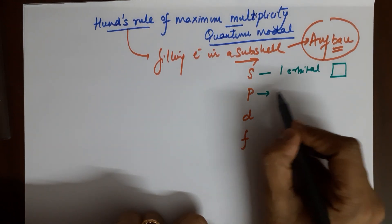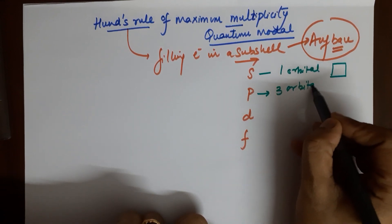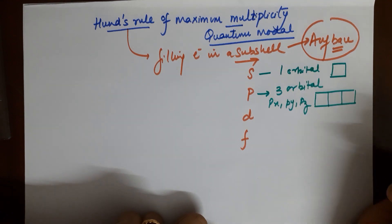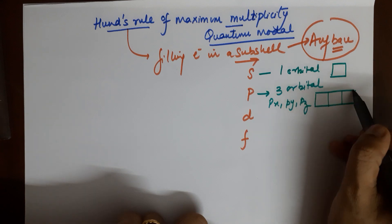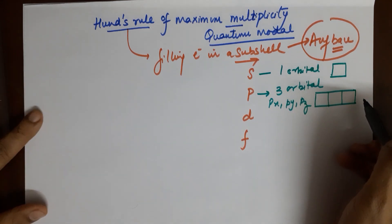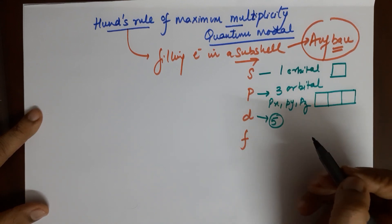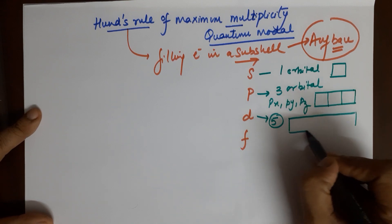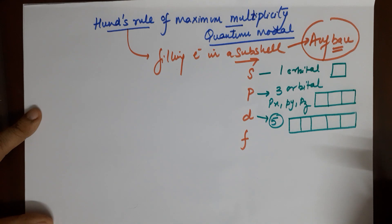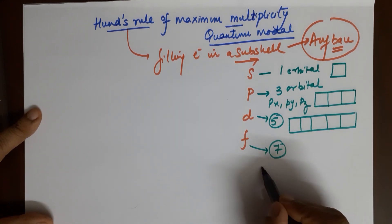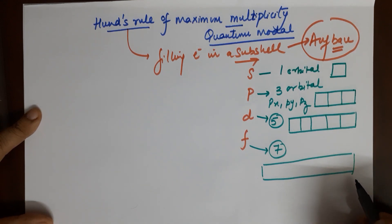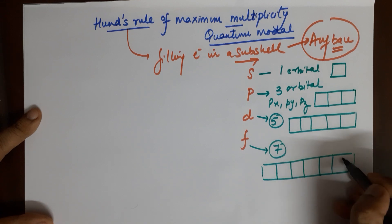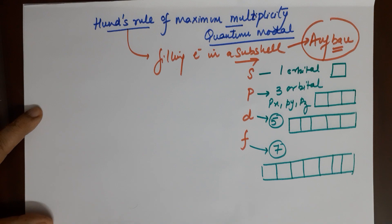The S subshell has only one orbital, so it is represented as one box. The P subshell has three orbitals — Px, Py, Pz — represented as a box with three compartments. The D subshell has five orbitals (xy, yz, zx, x²-y², and z²), so it is drawn as a chain with five boxes. The F subshell has seven orbitals, so it is represented with seven boxes.